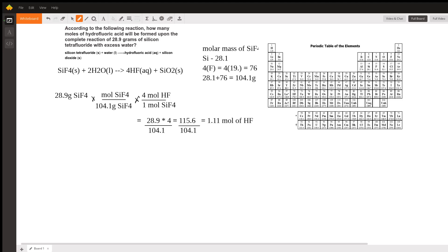We have this reaction here: silicon tetrafluoride solid plus water makes hydrofluoric acid and silicon dioxide. First, let's write down the molecular formulas of each of these compounds. Silicon tetrafluoride is SiF4, water is H2O, hydrofluoric acid is HF, and silicon dioxide is SiO2.